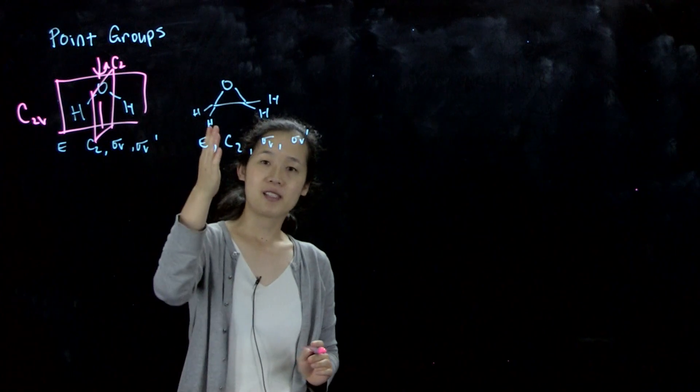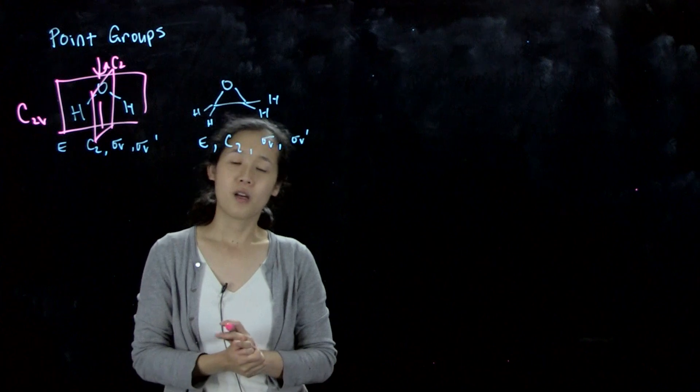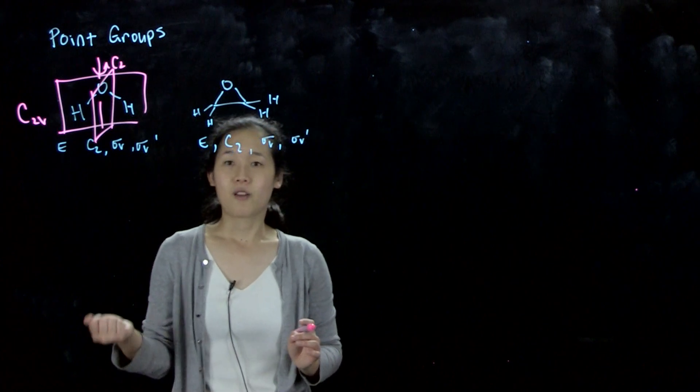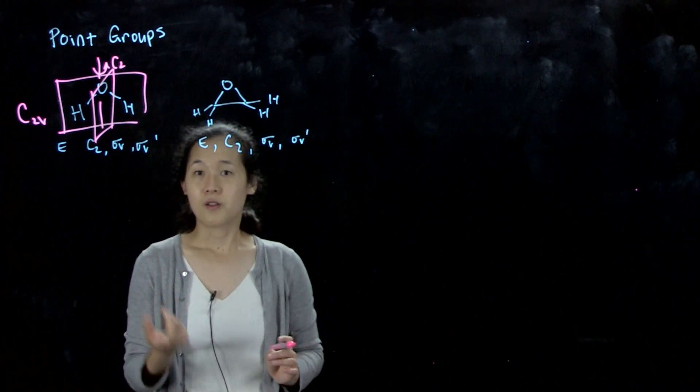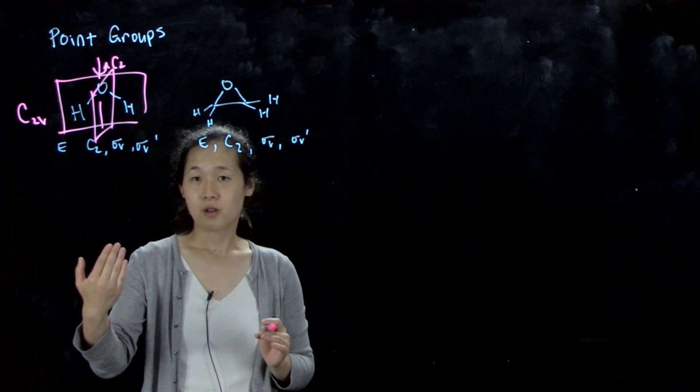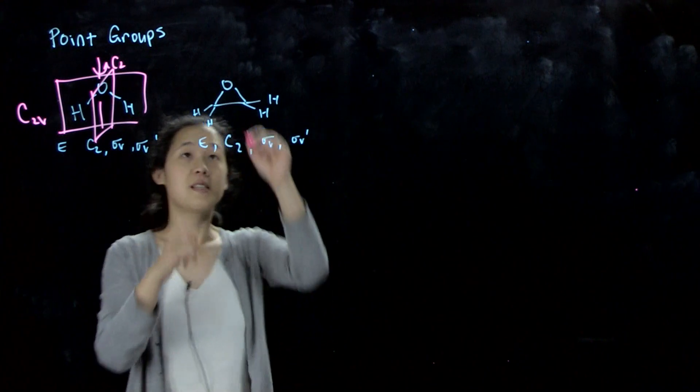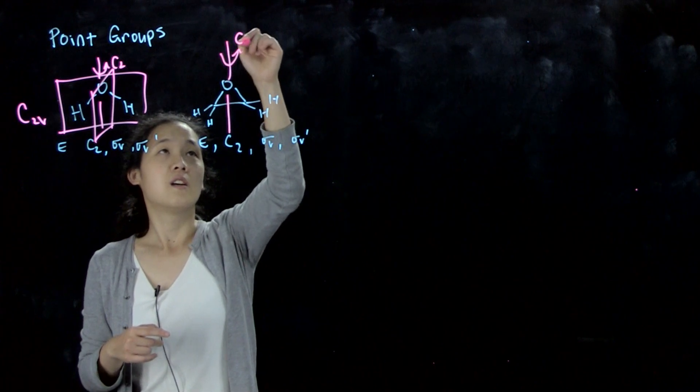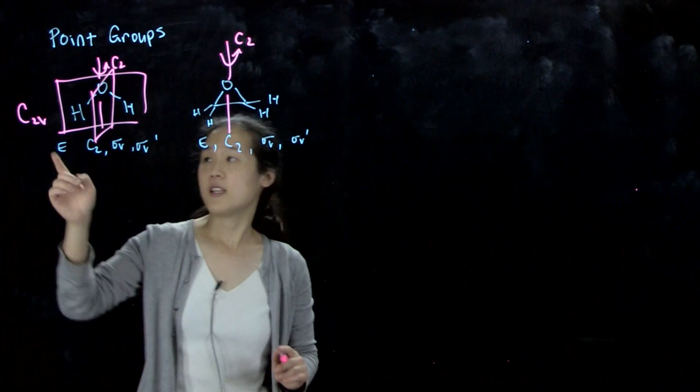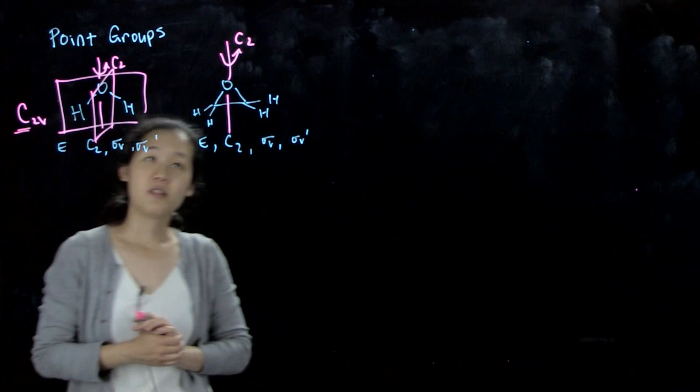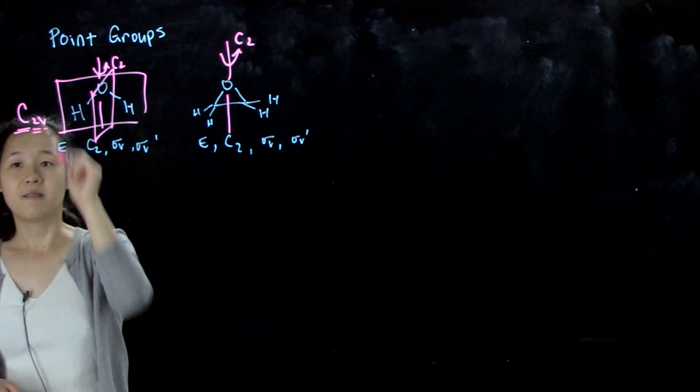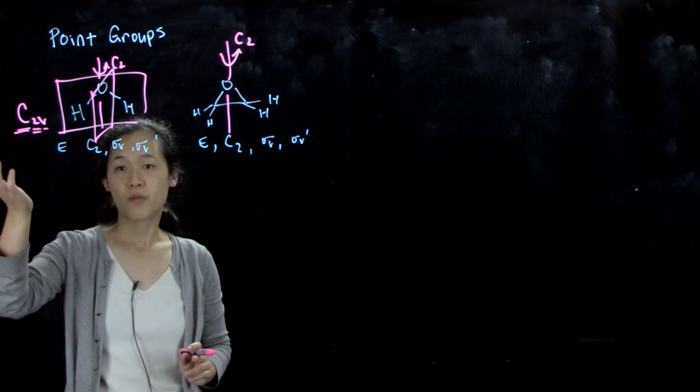First you want to see whether it's in a special high symmetry group. The typical one is if there are multiple higher order axes. The example we did in class today was methane and octahedral molecules, and those have multiple C3s or C4s. So those are in higher symmetry groups. But this one does not. This one does have a C2. Because it has a C2 and doesn't have perpendicular C2s, it's got to be in this C label, C2, and because there's no horizontal mirror plane, it's got to be C2V.